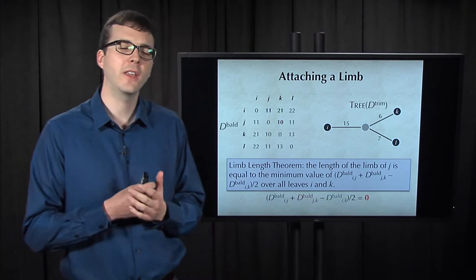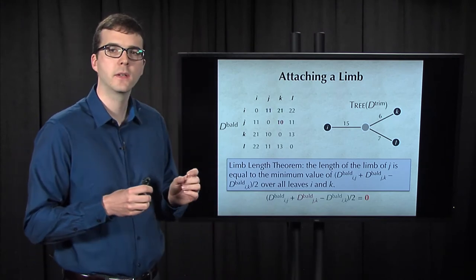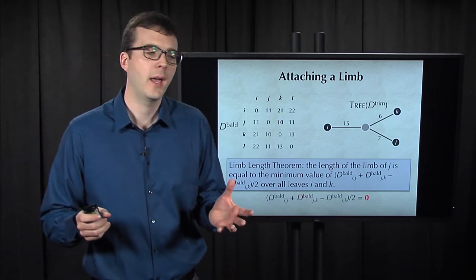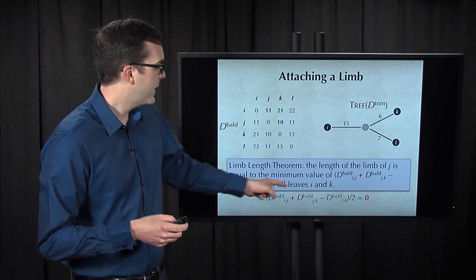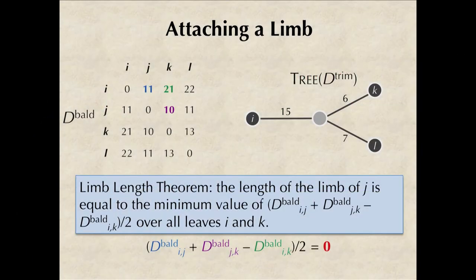So we'll apply the limb length theorem then to this bald matrix on the length of the limb of J. But we know that the length of the limb of J in the bald matrix is just 0. And so when we take this minimum we see that we obtain that D bald IJ plus D bald JK minus D bald IK over 2 is going to be equal to 0, because 11 plus 10 minus 21 is equal to 0.